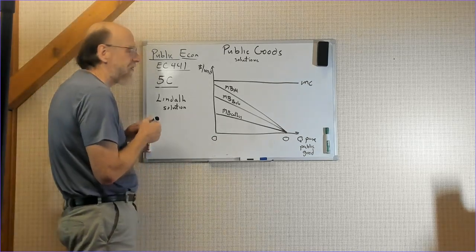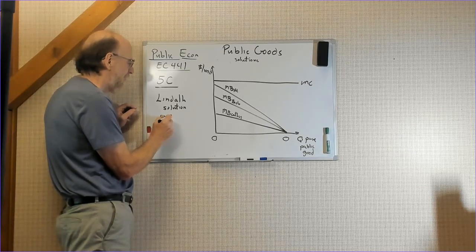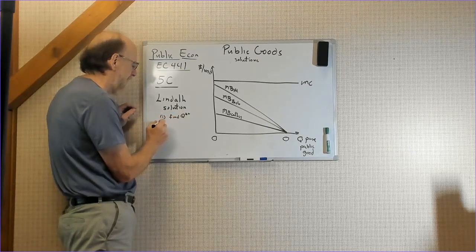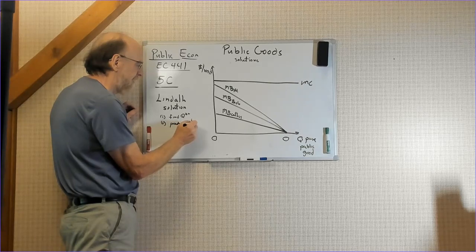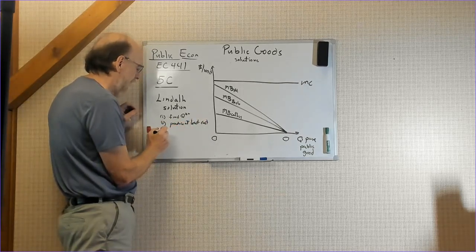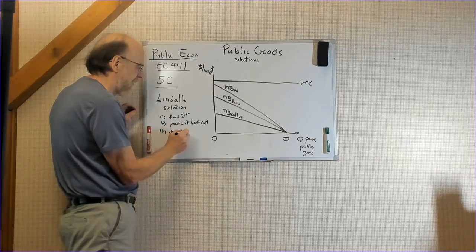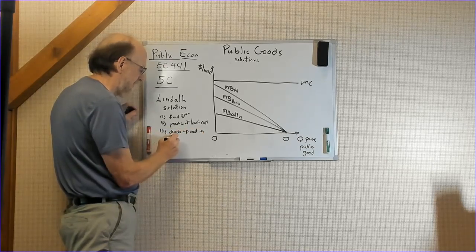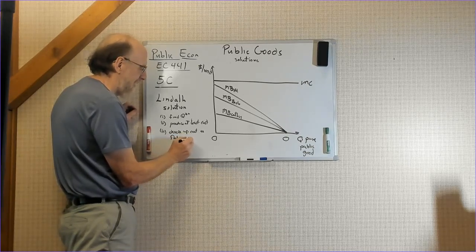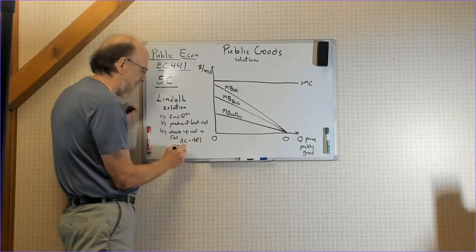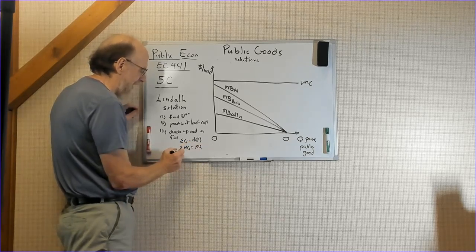The Lindahl solution is pretty similar to the Samuelsonian solution. It's got one more condition. Again, we're going to find Q star star, produce at least cost, and divide up costs so that the sum of C_i individual cost payments equals the cost of Q star. The sum of the marginal cost i's equals the marginal cost of production.